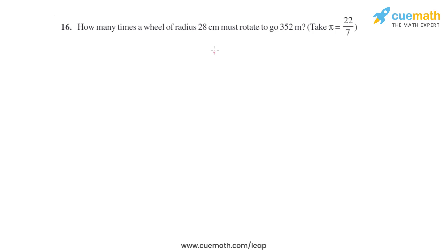Question 16 of this exercise says: How many times a wheel of radius 28 cm must rotate to go 352 meters? Take π = 22/7. As we can see, the radius is given in centimeters and the total distance is given in meters, so let's make the units the same.